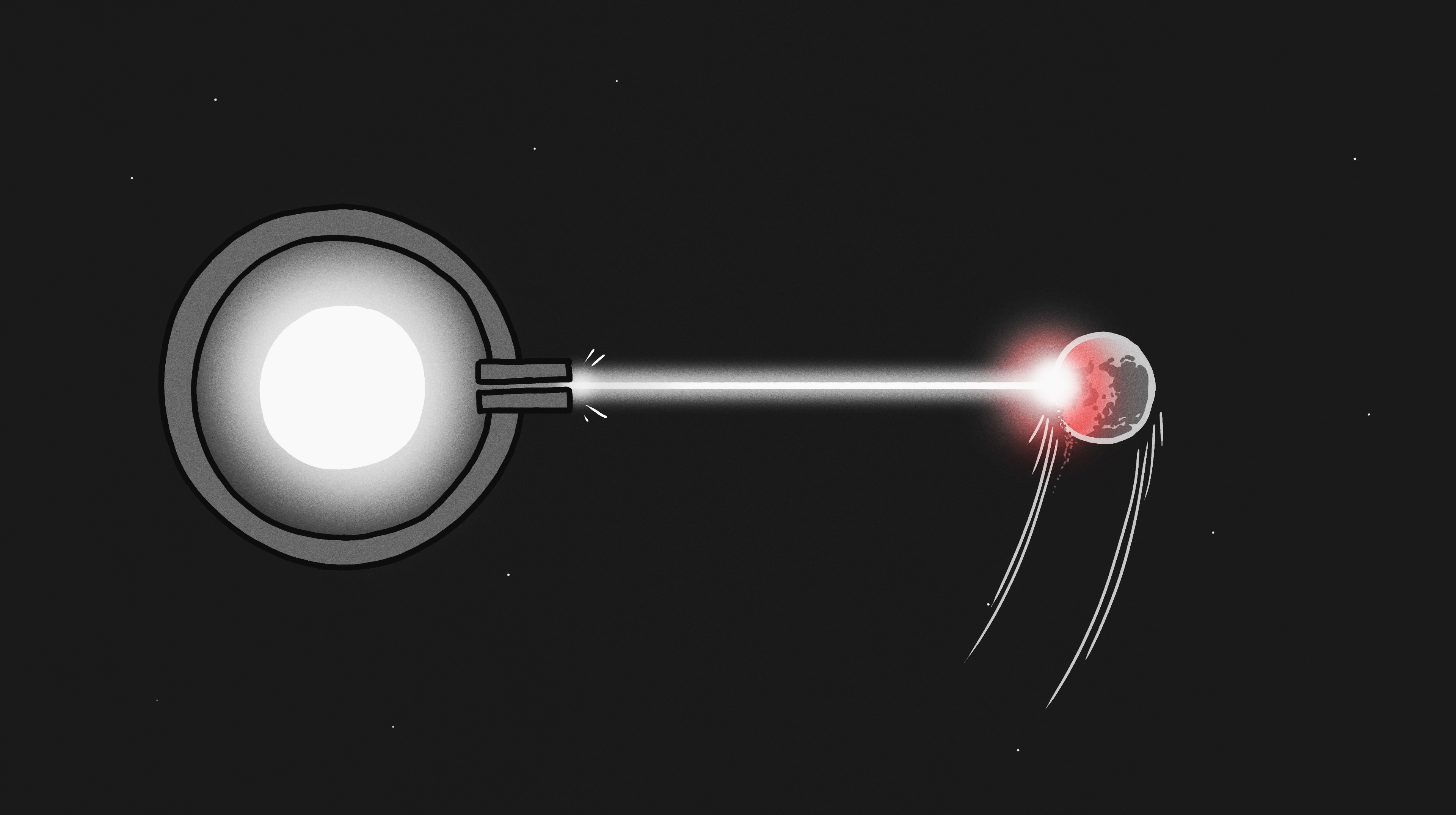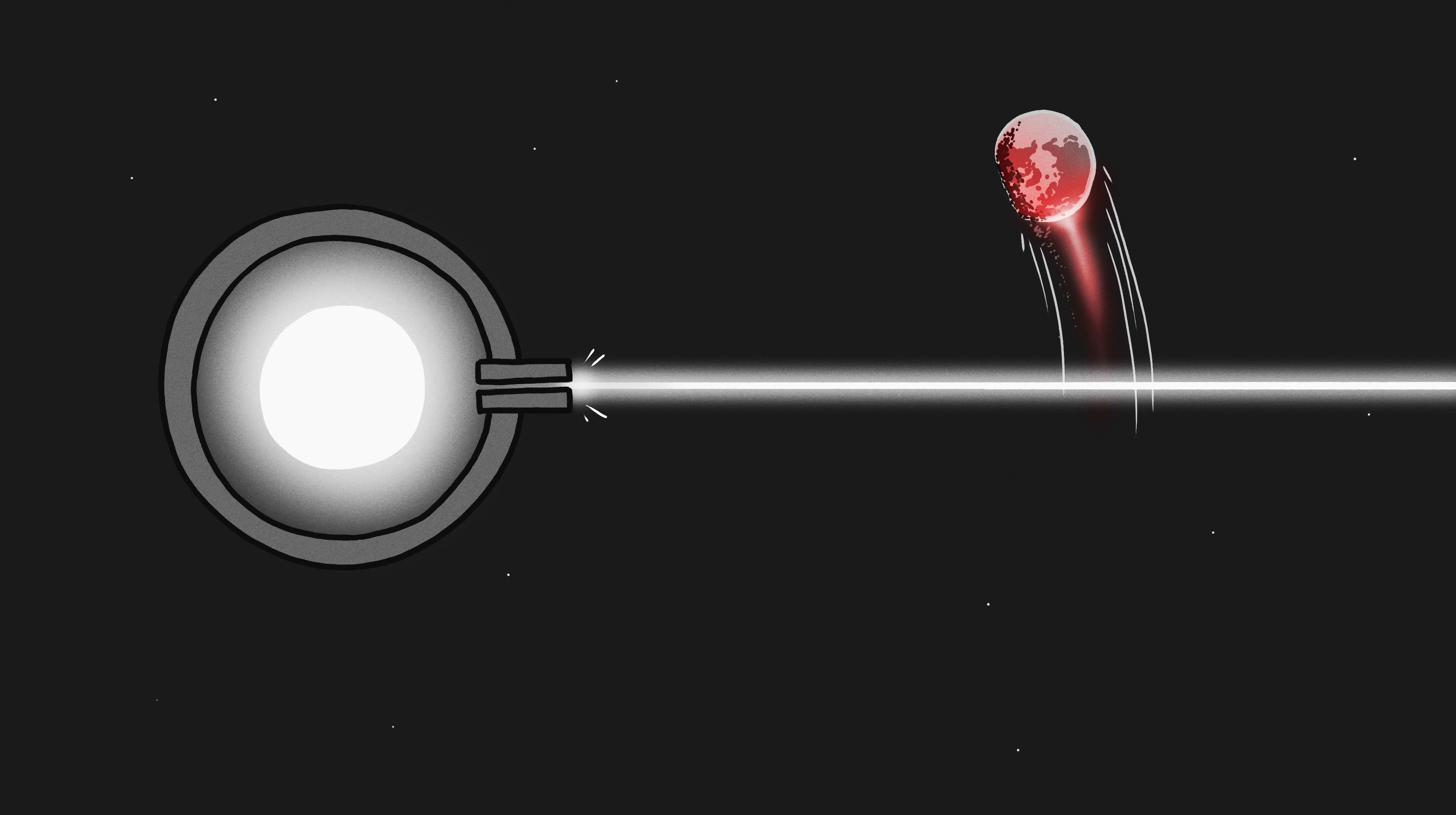If not, the Earth can only spend a maximum of about seven minutes in the path of the beam before our orbit carries us out of the way.